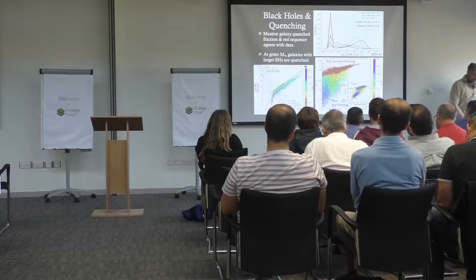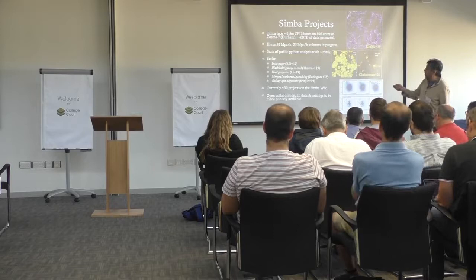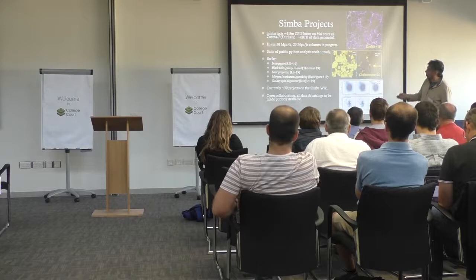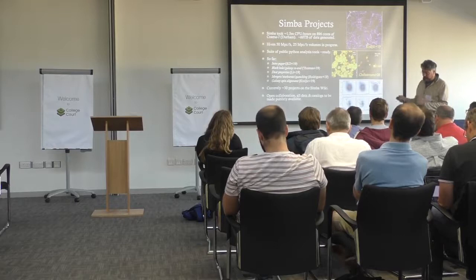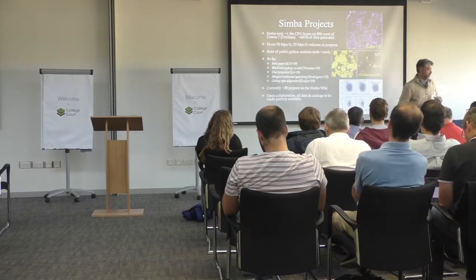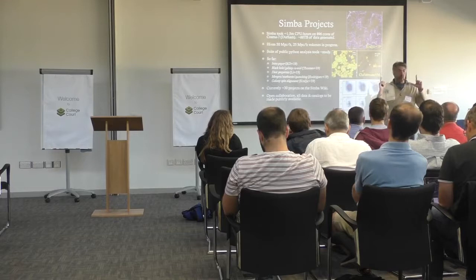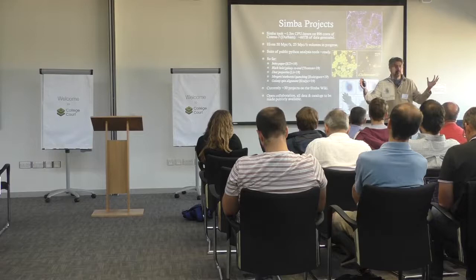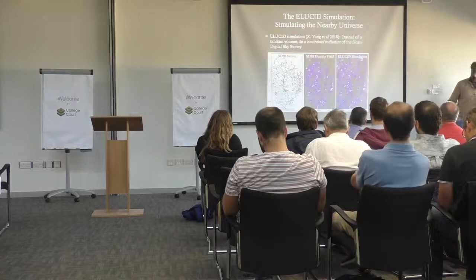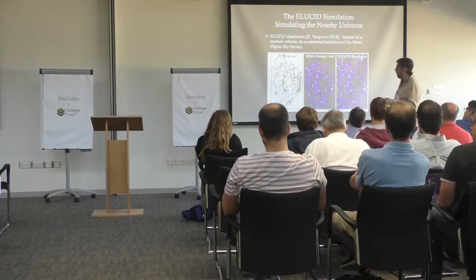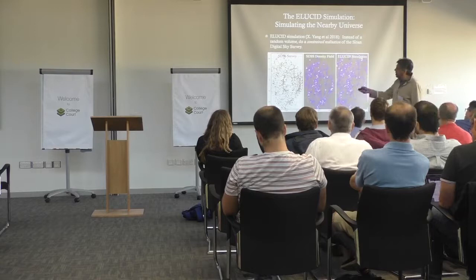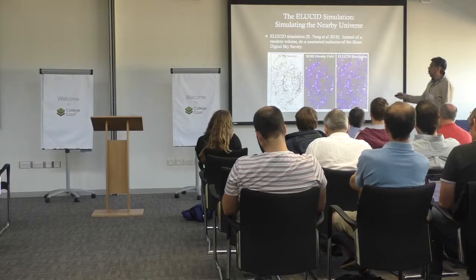There are a large number of projects going on with Simba, by the way — it took about 1.5 million CPU hours on Cosmic 7. The next thing we thought about was: this is a random patch of the universe — wouldn't it be cool if rather than simulating a random patch, we could really simulate the universe around us? So we partnered with a group in China who ran the Elucid simulation. Elucid was a dark matter-only simulation where they took the observed distribution of galaxies from the Sloan Digital Sky Survey, created a density map, took it back in time to initial conditions using very sophisticated techniques including velocity information, and then ran the simulation forward with an N-body code.